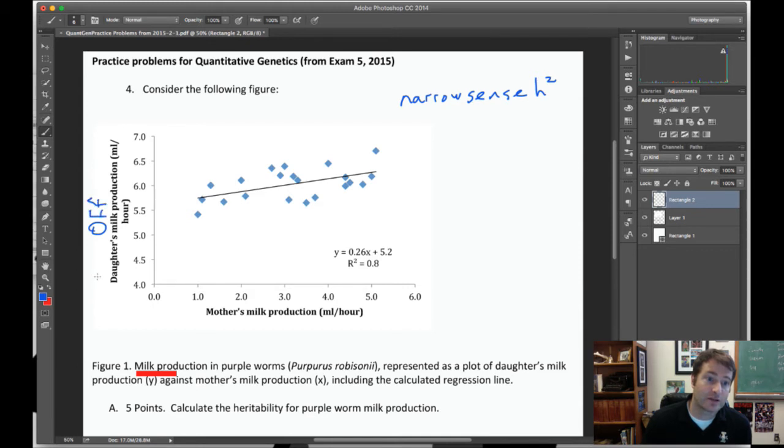I have to write offspring. Writing sideways is hard. On the y-axis and parents on the x-axis. Now this is a bit of a wrinkle, this particular problem. We'll get to that in a second.